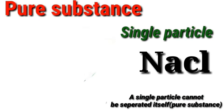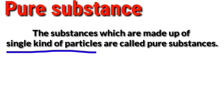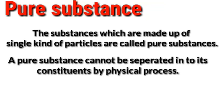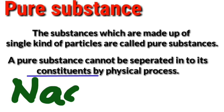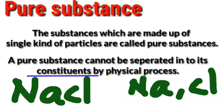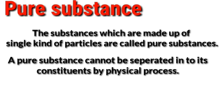What is the structure of sodium chloride? Substances that are made up of only one kind of particle are pure substances. A pure substance cannot be separated into its constituents by a physical process such as evaporation or filtration. We call it NaCl — it is a single substance, not separated into its constituents. Sodium chloride is made of sodium and chloride.